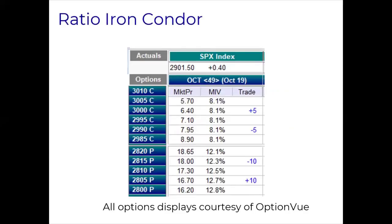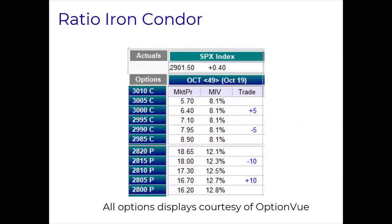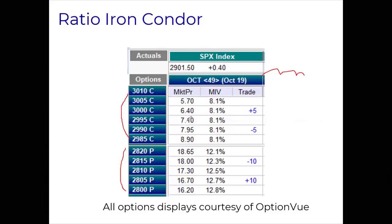Just to review things, I'm using OptionView's matrix here. Whenever you look at an OptionView matrix, you have the calls on the top and the puts on the bottom. Reading left to right, you have the different expiries going across the screen. Here we're showing the market price — the midpoint between bid and ask of each option — the implied volatility of the midpoint, and the actual proposed contracts. This is just a ratio iron condor: we're doing a 10-lot of the out-of-the-money bull put spread and a 5-lot of the out-of-the-money bear call spread, and we're ratioing it to balance out the deltas.